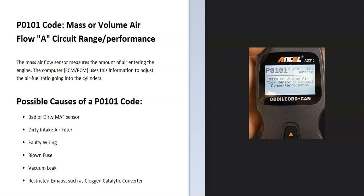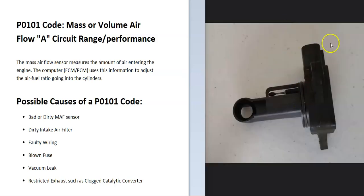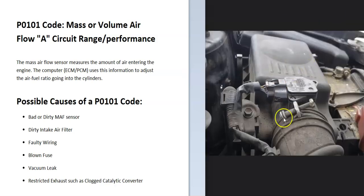Today I'm talking about a P0101 code — what it is and how you go about fixing it. A P0101 is a mass or volume airflow A circuit range performance code. There's a sensor called a mass airflow sensor located on the air intake box that measures all the air going into the engine, and the onboard computer uses that information to adjust the air-fuel ratio mixture going into the cylinders. When the computer sees a problem with this, it needs troubleshooting.